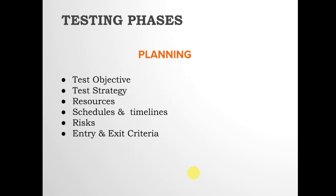In test planning, a tester or test lead defines the test objective — what they need to achieve at the end of testing. Next is test strategy, where the test lead or test manager defines how to achieve the test objective, what testing types to implement, how to execute test cases, and what tools will be used.